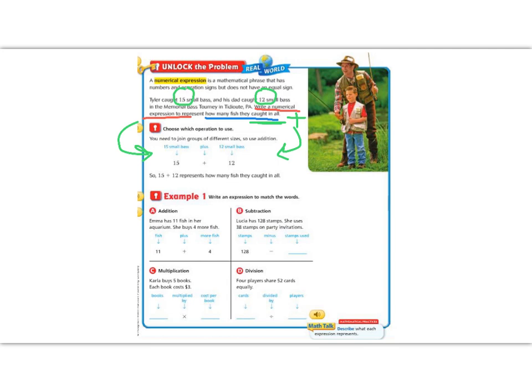Let's continue with example one. We're going to read the words and then write a numerical expression that the words are telling us. It says, Emma has 11 fish in her aquarium. She buys 4 more. So we start with 11. And more means we're getting bigger. So we add 4. 11 plus 4.